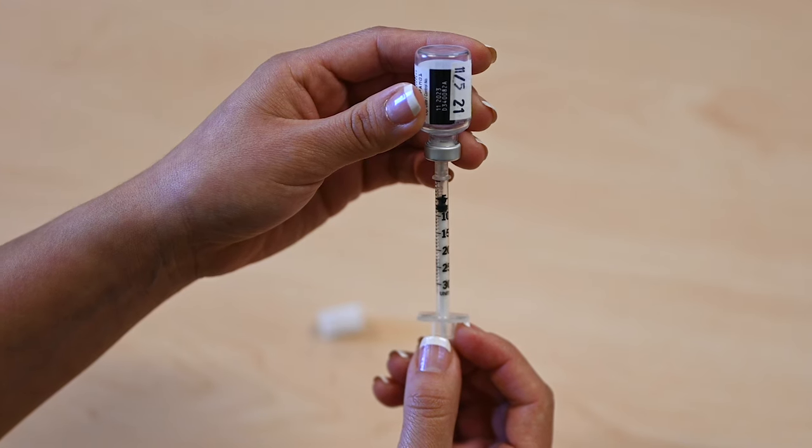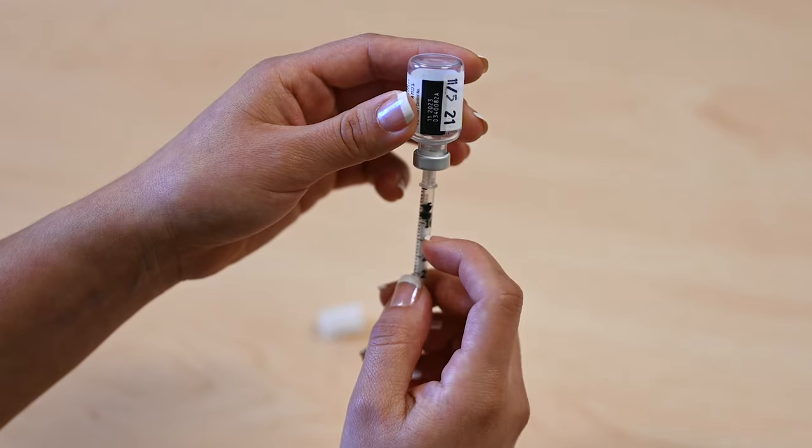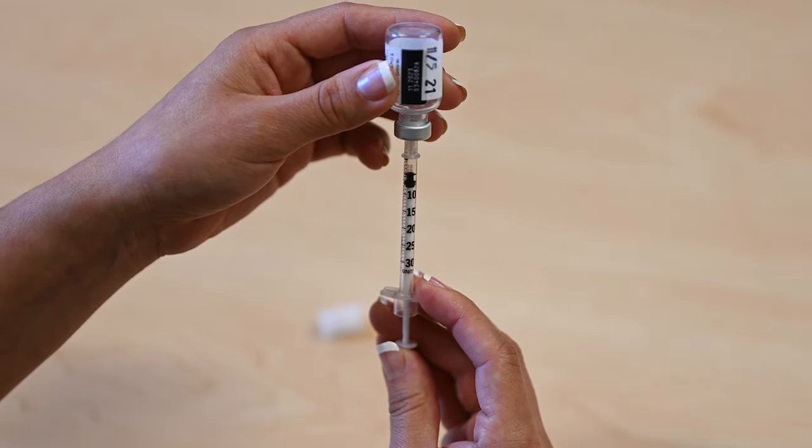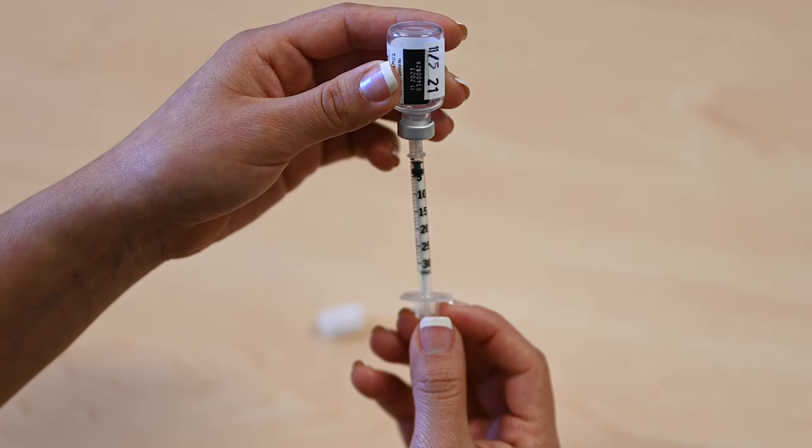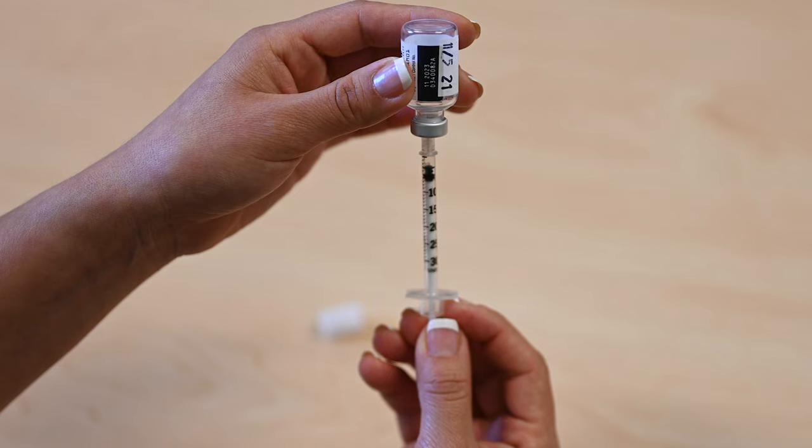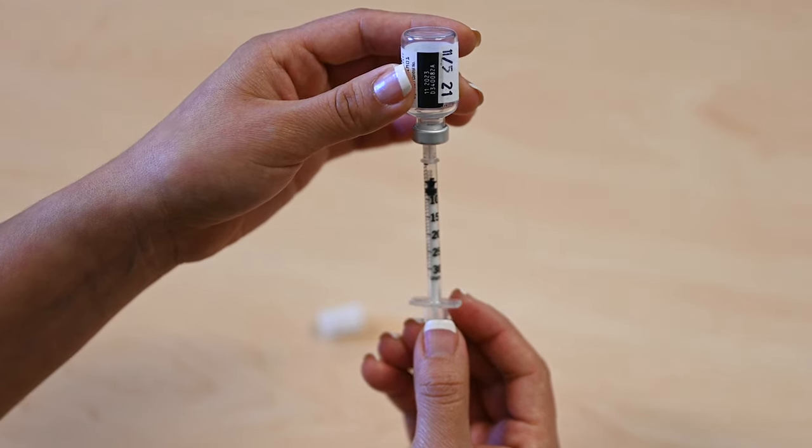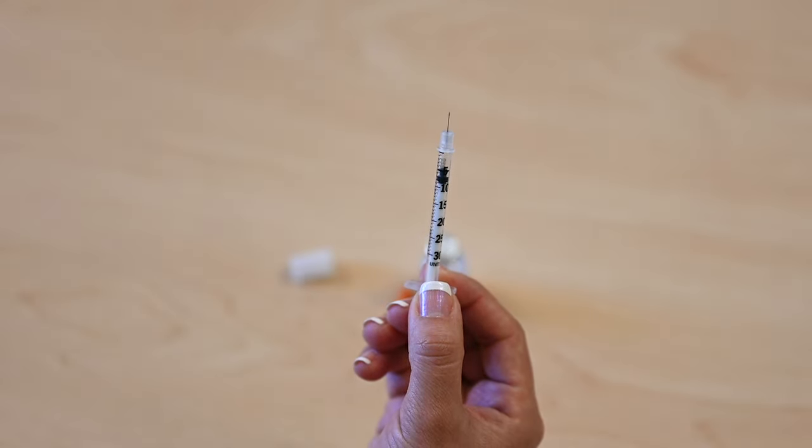If you see bubbles in the syringe, gently tap the syringe to bring the bubbles to the top. Push the syringe to release the bubbles into the vial of insulin. Pull the plunger back to your dose. Remove the syringe from the vial. Check your dose of insulin in the syringe.